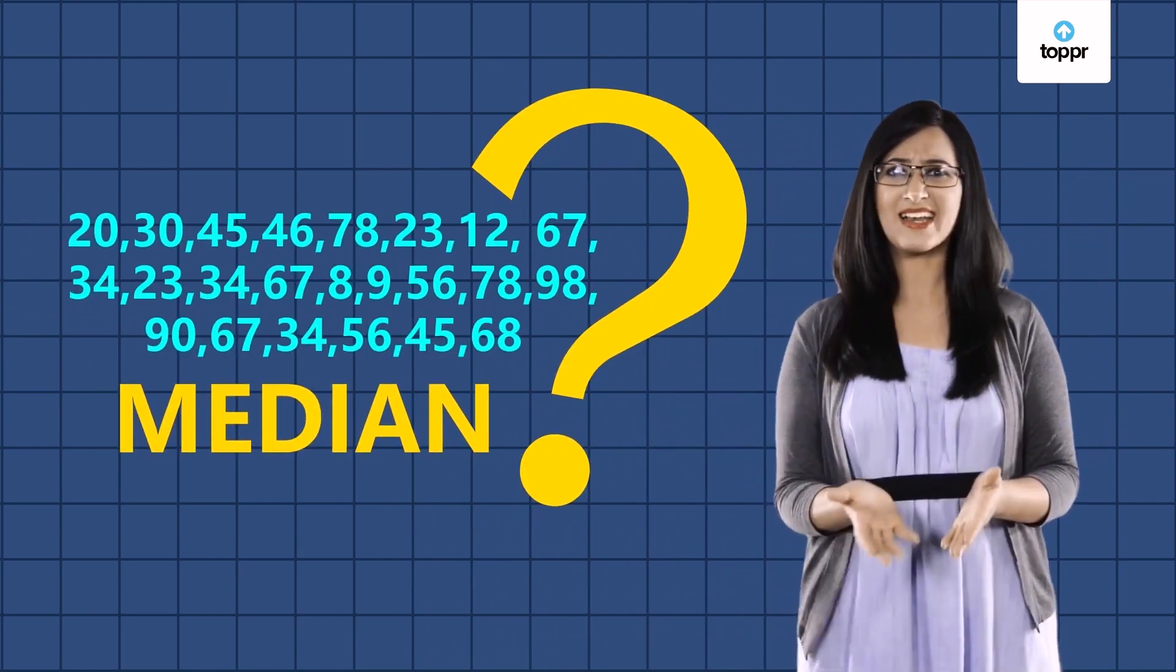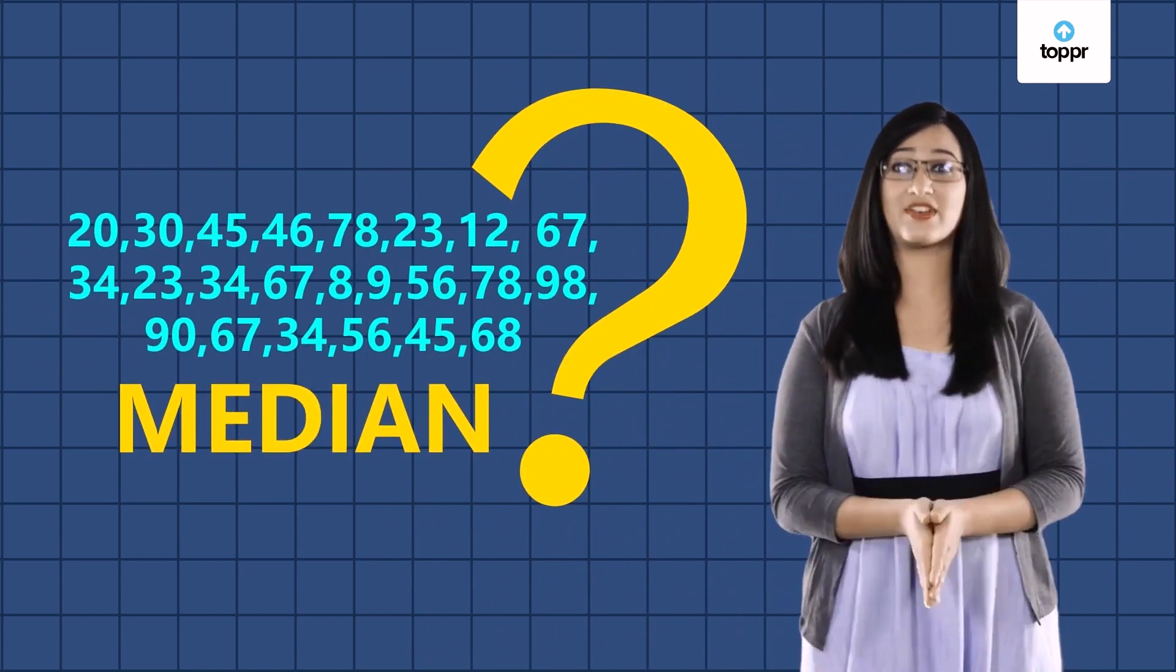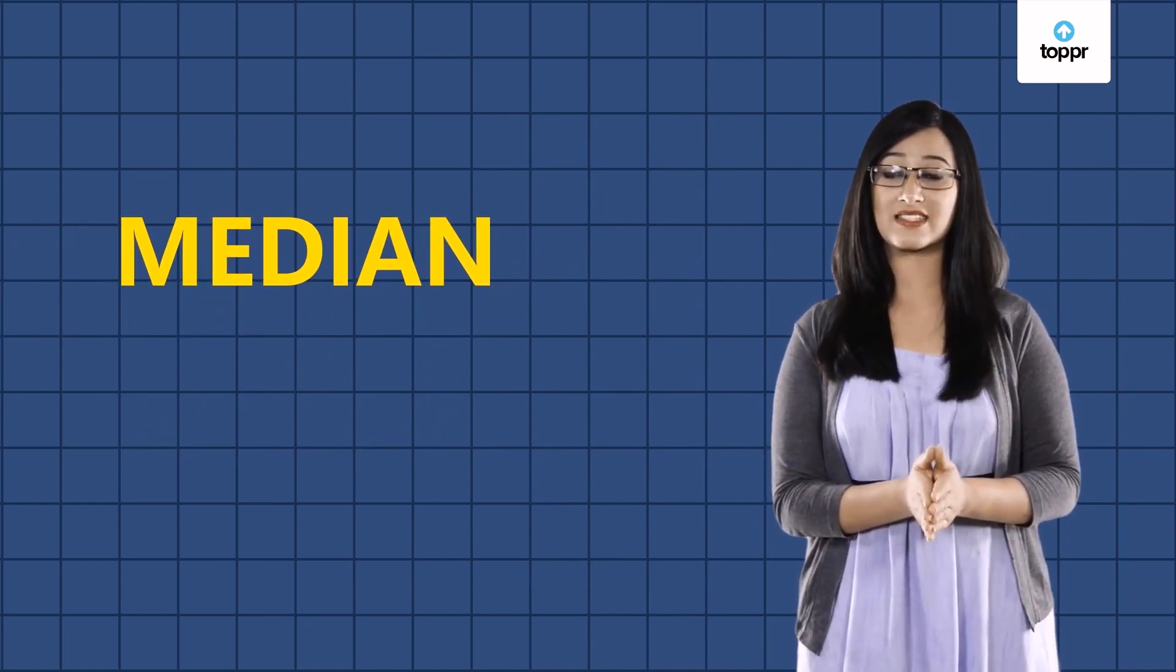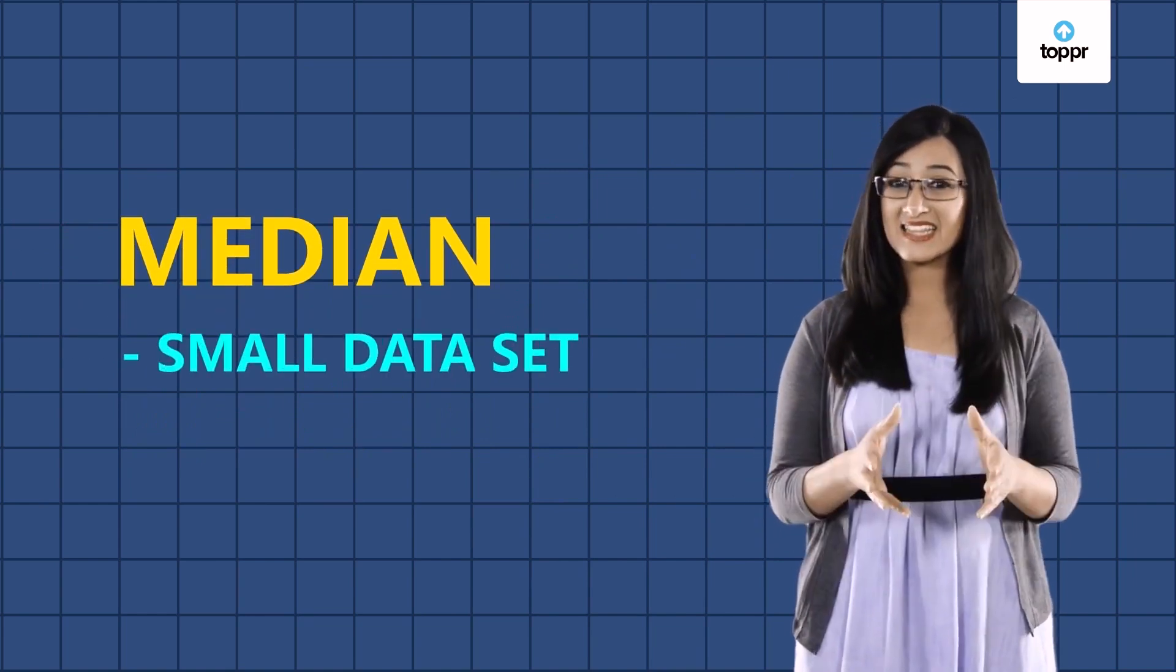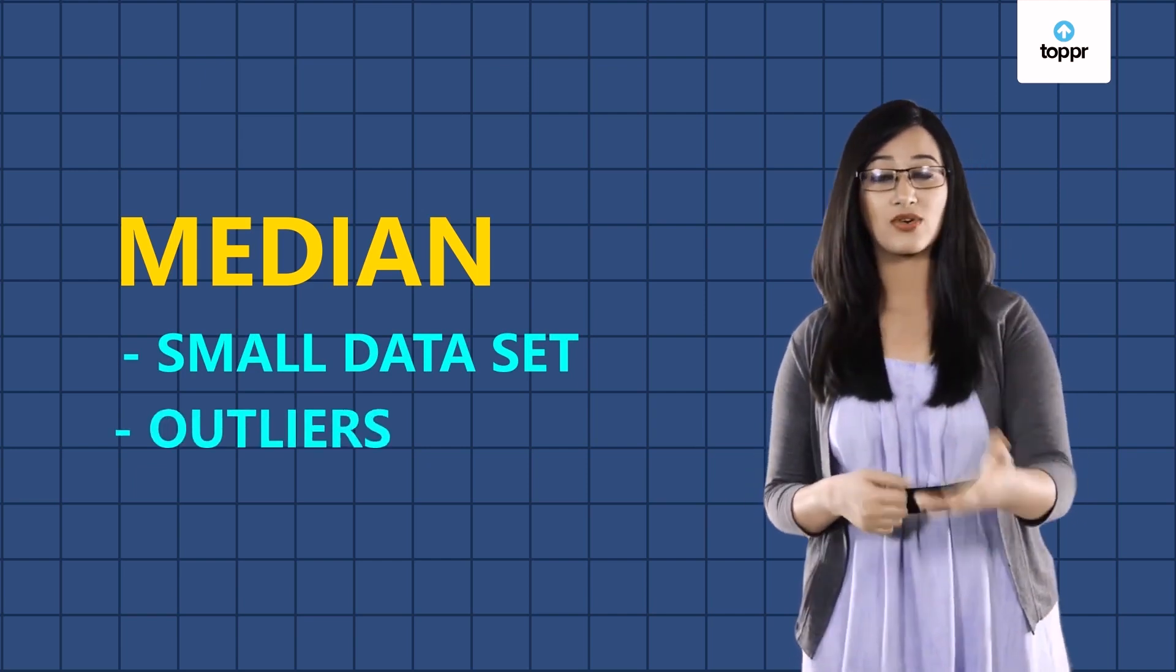Now, calculating the median is easy when the data set is small, but what happens when you have a large number of values? Finding the median would take a lot of time. So the median is a good representation of data sets that are small and that contain values that are outliers.